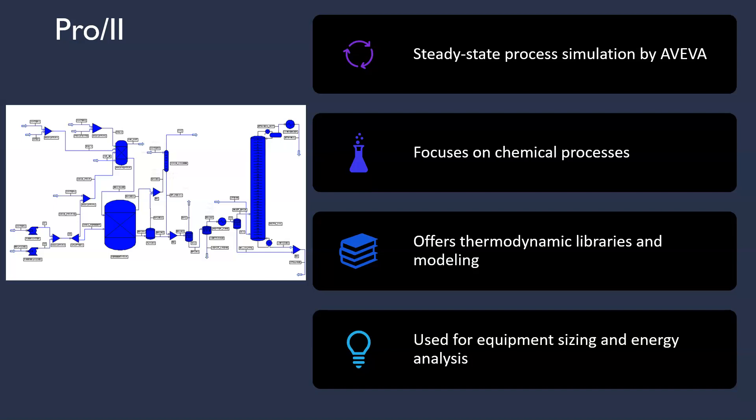Pro-2 is a steady state process simulation software that focuses on chemical processes and equipment sizing. By utilizing Pro-2, chemical engineers can model and simulate complex processes, accurately size equipment and evaluate process performance.